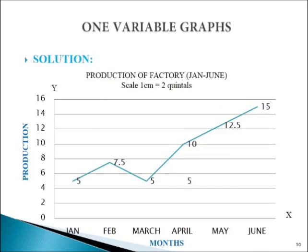With the given information, we will make a one variable graph. First, we will write the heading: production of factory from January to June. For this particular graph, we have taken scale 1 cm equals to 2 quintals on the y-axis. We will indicate time periods in terms of months on the x-axis — January, February, March, April, and so on — and production on the y-axis in 2 quintals, 4 quintals, 6 quintals, etc. Then we mark different points on the graph indicating values of production corresponding to different months: in January it is 5 quintals, in February it is 7.5 quintals, in March it is 5 quintals, and so on. After that, we join the points to get a graph showing the behavior of production over time. This is how we make a one variable graph.